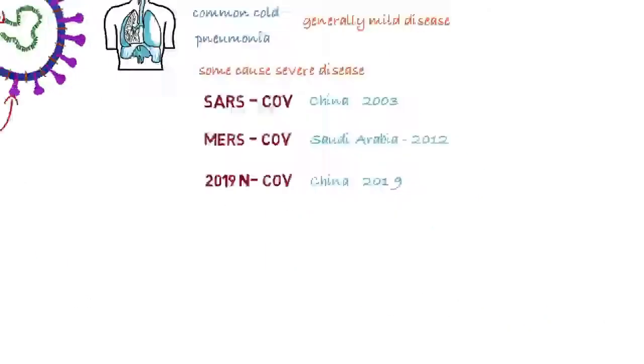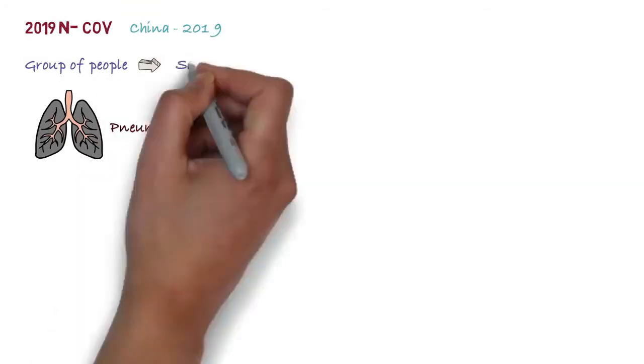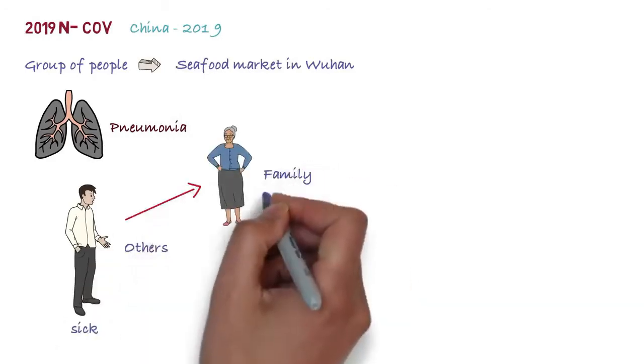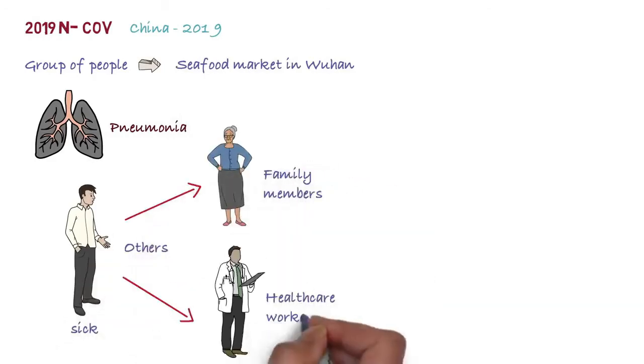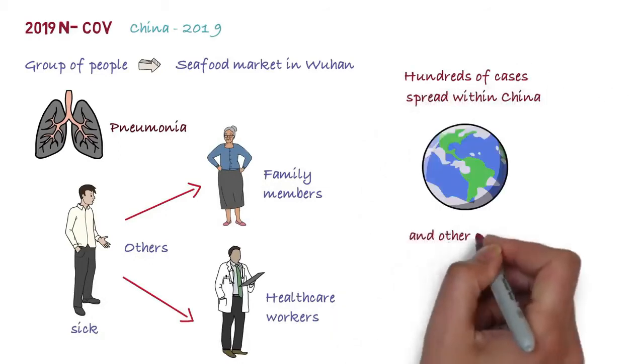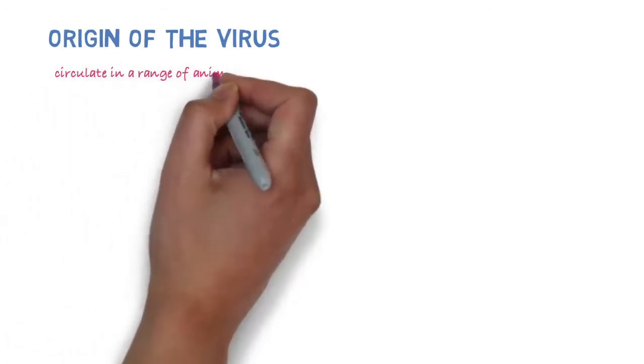The 2019 novel coronavirus was first identified in China. It initially occurred in a group of people with pneumonia who'd been associated with a seafood market in the city of Wuhan. The disease has since spread from those who were sick to others, including family members and healthcare staff. There are hundreds of cases at present and the disease has spread within China and also to a number of other countries.